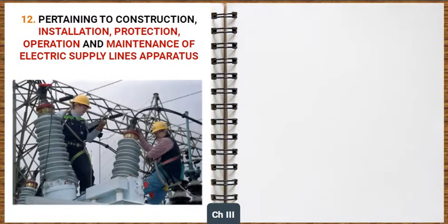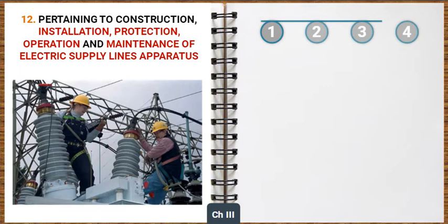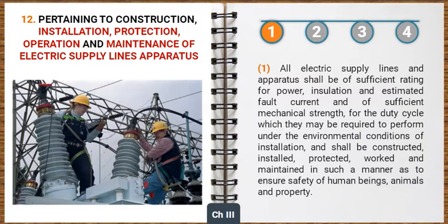Now let's look at the general safety requirements pertaining to construction, installation, protection, operation and maintenance of electric supply lines and apparatus. All electric supply lines and apparatus shall be of sufficient rating for power, insulation and estimated fault current, and of sufficient mechanical strength for the duty cycle which they may be required to perform under the environmental conditions of installation. They shall be constructed, installed, protected, worked and maintained in such a manner as to ensure safety of human beings, animals and property.